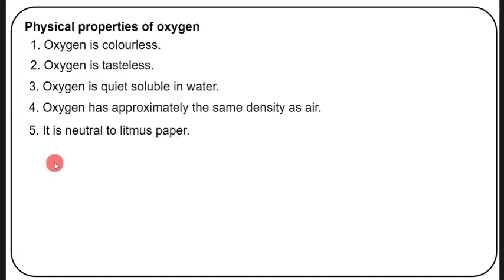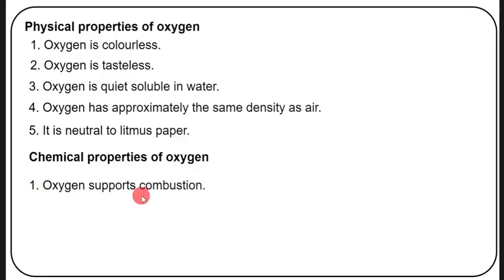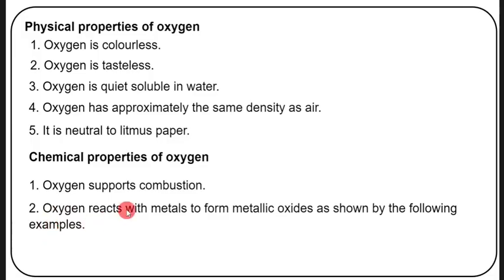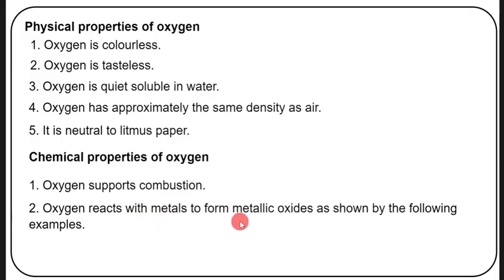Now the chemical properties of oxygen. Number one: oxygen supports combustion — many things burn in oxygen. Number two: oxygen reacts with metals to form metallic oxides, as shown by the following examples.